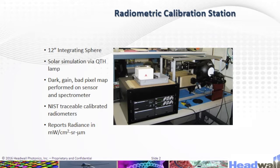Here we have a radiometric calibration station, shown in the picture. It's made of a 12-inch integrated sphere with a solar simulation and a VIQTH lamp. We have the dark gain bad pixel map performed on the sensor and spectrometer, and it uses NIST traceable calibrated radiometers.